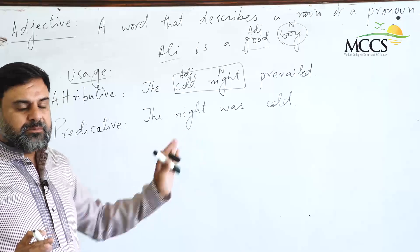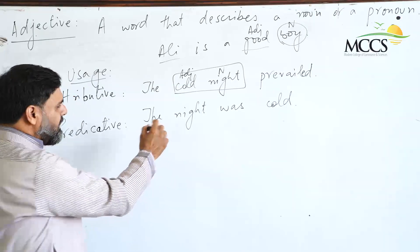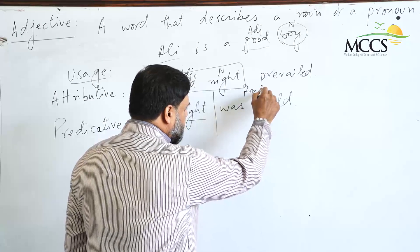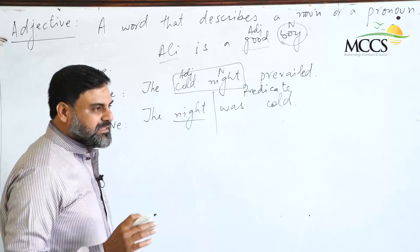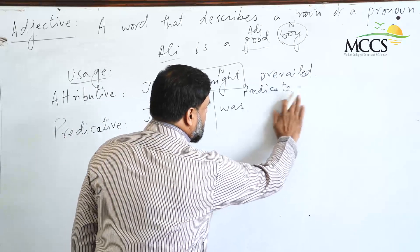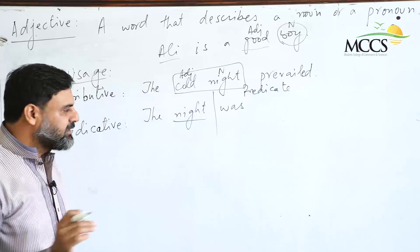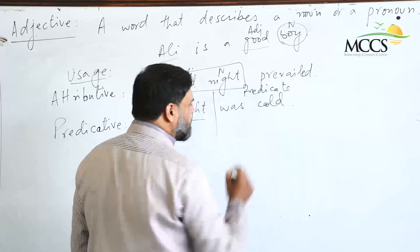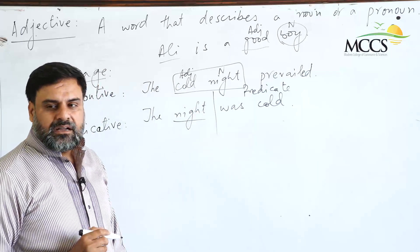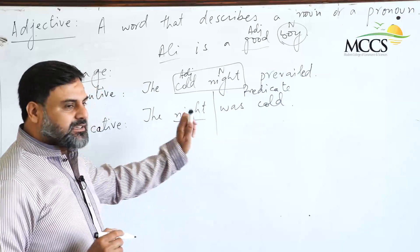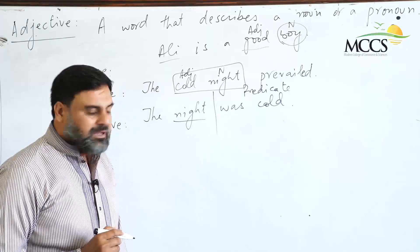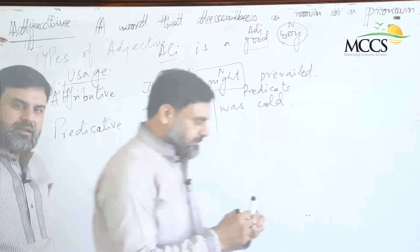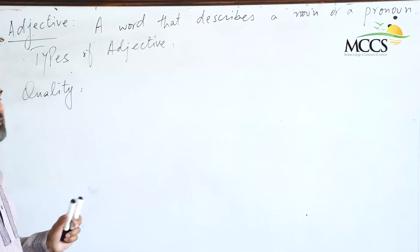On the other hand, there is the predicative use, where the adjective comes after the noun and completes the predicate of the sentence. So if we write the adjective, our predicate will be complete. Having seen the usage of adjectives, now we are going to discuss the types of adjectives.